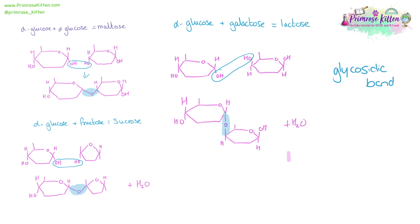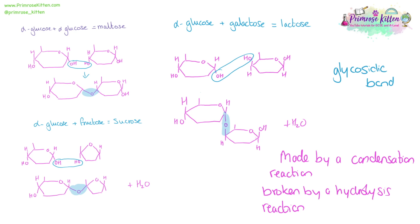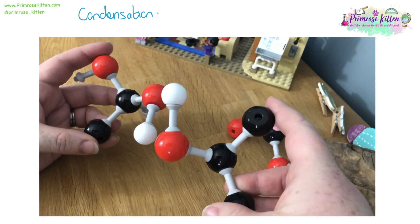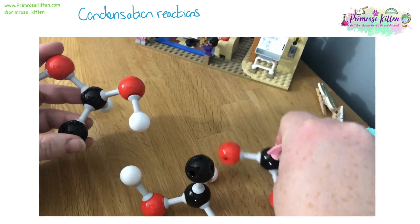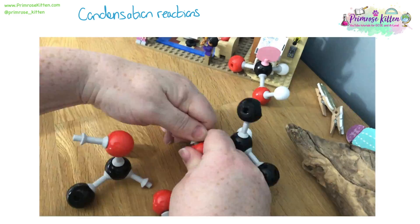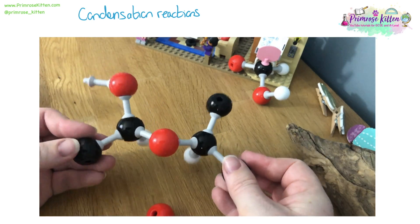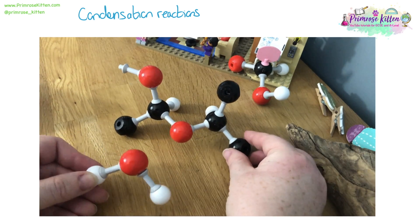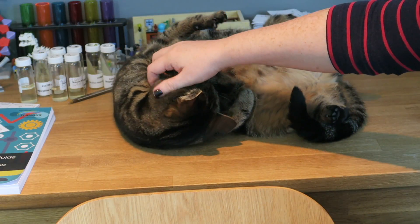These monosaccharides are joined together by a condensation reaction, and they can be broken apart by a hydrolysis reaction. Learning the meaning of these words tells us what is happening: 'hydro' means water and 'lysis' means break — so hydrolysis is breaking by water — while a condensation reaction releases water. Looking at the models, we join the OH group to the OH group. There are too many O's and H's to form a full bond, so when they react, the bond is made and what's left over is water.